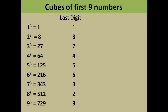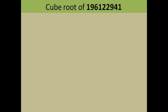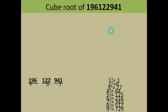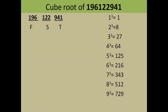Now let's find the cube root of a nine-digit number. We will find the cube root of 1,096,122,941. First, we divide this number into groups of three digits starting from the right-hand side. The number is divided into three pairs: 1 | 096 | 122 | 941.